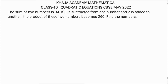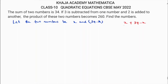The sum of two numbers is 34. If 3 is subtracted from one number and 2 is added to another, the product of these two numbers becomes 260. Let the two numbers be x and 34 minus x, because x plus (34 minus x) will give 34. So one number is x and the other number is 34 minus x.